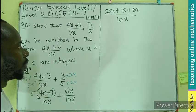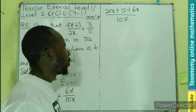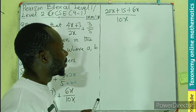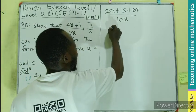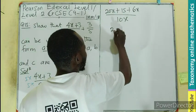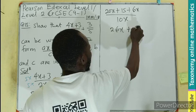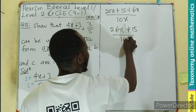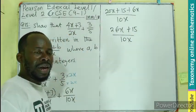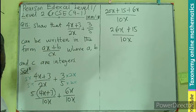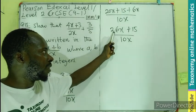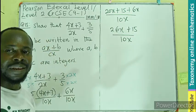We find the arithmetic in the numerator. 20x plus 6x gives us 26x, plus 15, divided by 10x. This is in the form ax plus b divided by cx. We can see a is 26, b is 15, and c is 10.